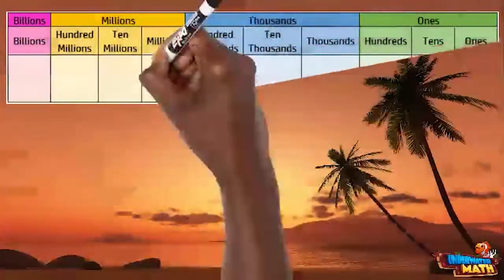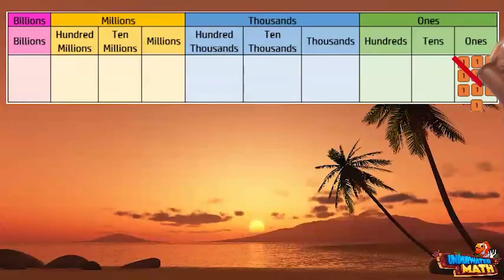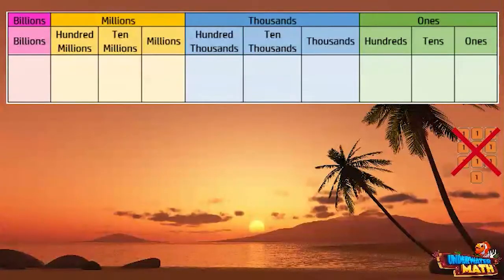Look at the place value chart. We can't put 10 ones into one box, so we will carry over those 10 ones and change them into one 10. So a one in the tens place has a value 10 times greater than a one in the ones place because it replaces 10 ones.